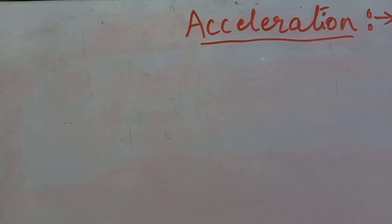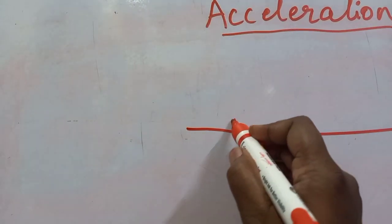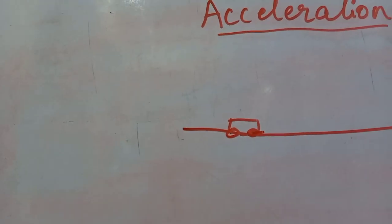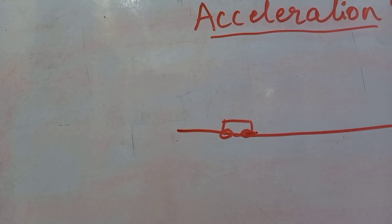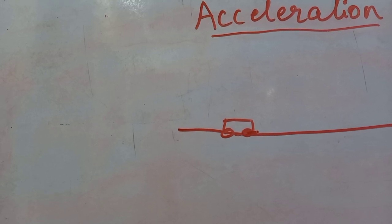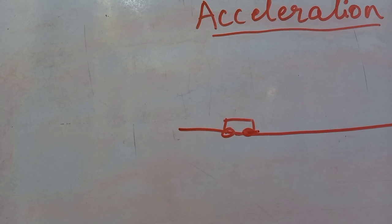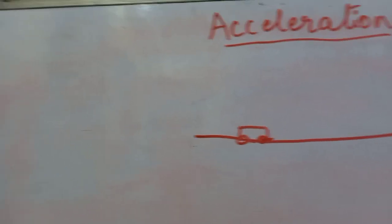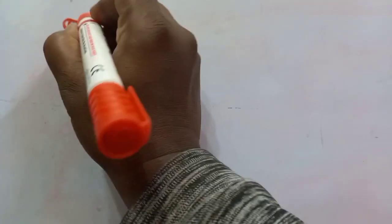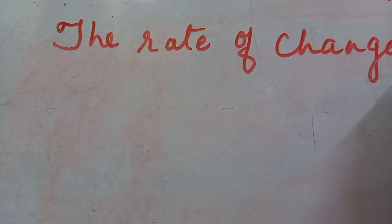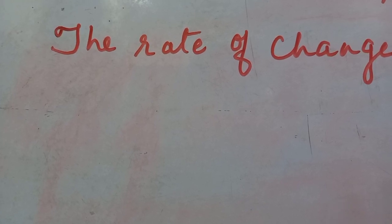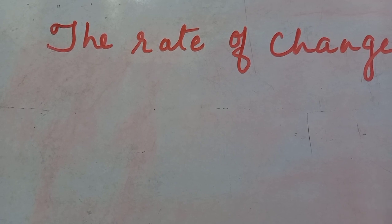Let us start with acceleration. What is meant by acceleration? If a body is moving with a constant speed — suppose there is a vehicle moving — it is said to have uniform acceleration. Acceleration is nothing but the rate of change of velocity. As the velocity changes with respect to time, it gives rise to acceleration. The rate of change of velocity is called acceleration.